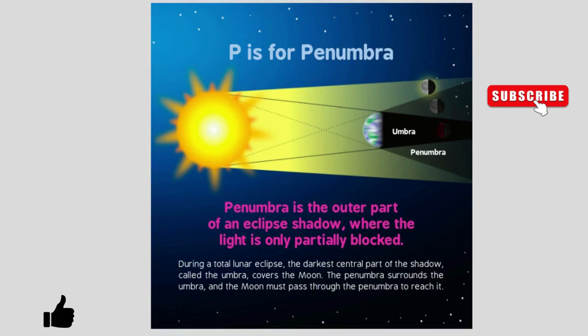P is for Penumbra. The penumbra is the outer part of an eclipse shadow where the light is only partially blocked. During a total eclipse, the darkest central part of the shadow, called the Umbra, covers the Moon. The penumbra surrounds the umbra, and the Moon passes through the penumbra to reach it.